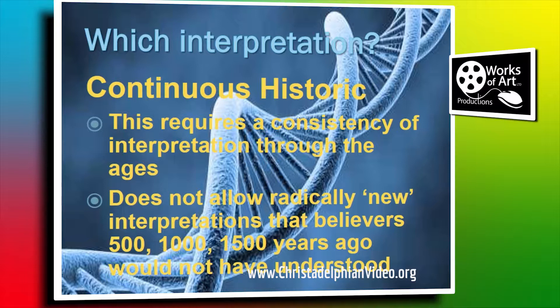But there's a straightjacket with continuous historic, and that is our interpretation can't change radically. Because if we suddenly come up with something completely different, then what we're effectively saying is all those brethren and sisters through a thousand, fifteen hundred, eighteen hundred years - they're all wrong. None of them understood it. They were all adrift. So we have a straightjacket. We have to interpret it in the same way that brethren in the first, second, third, or fourth century were understanding.